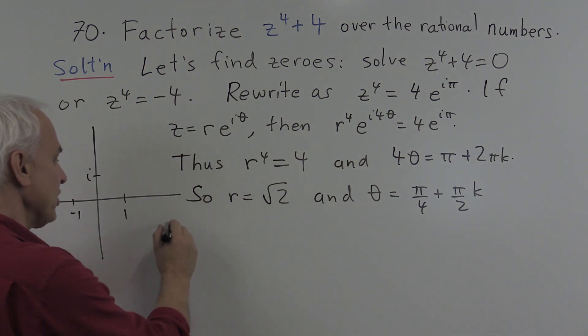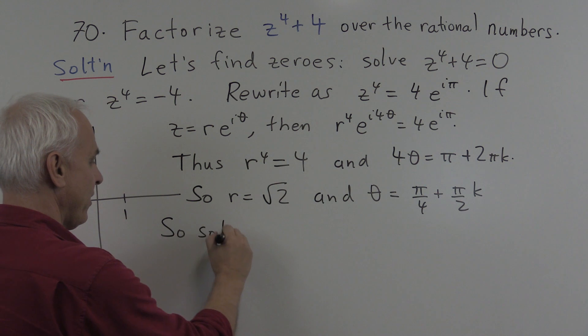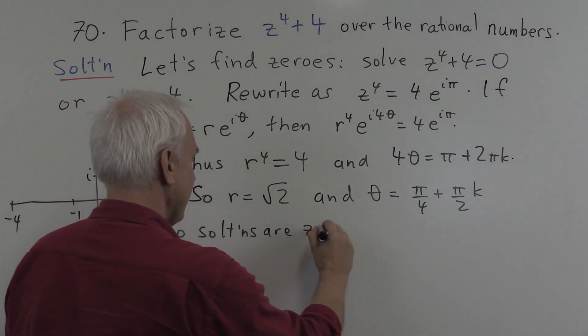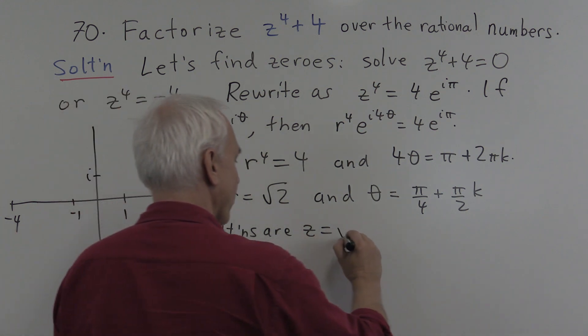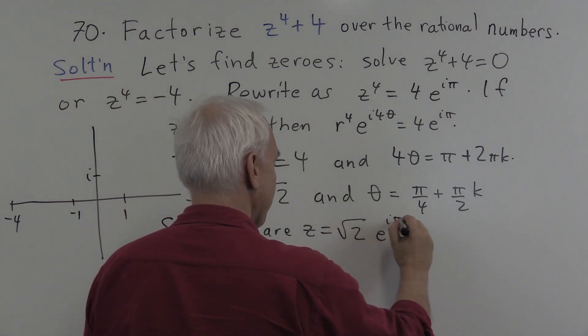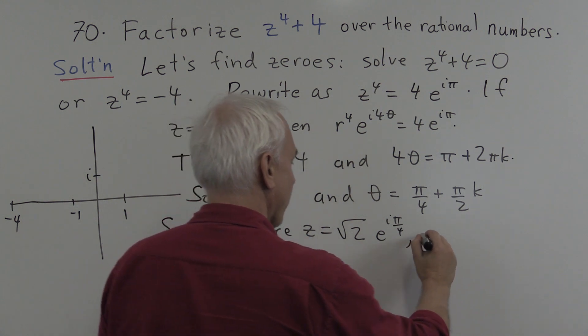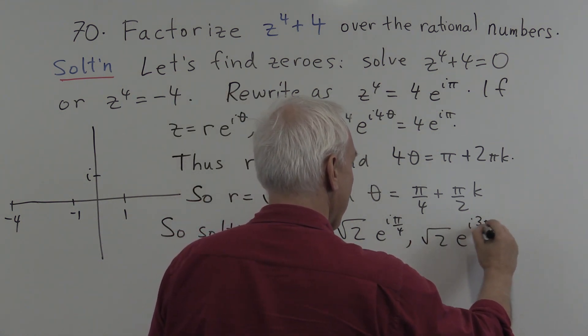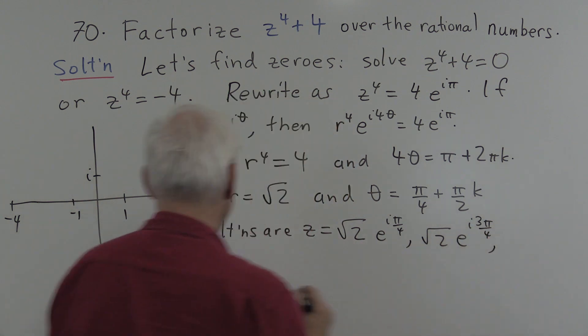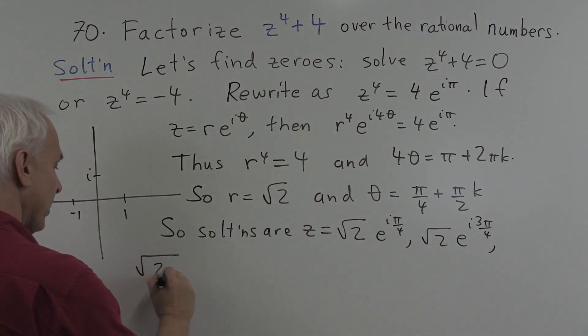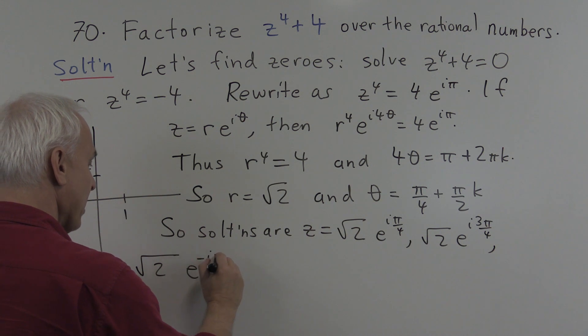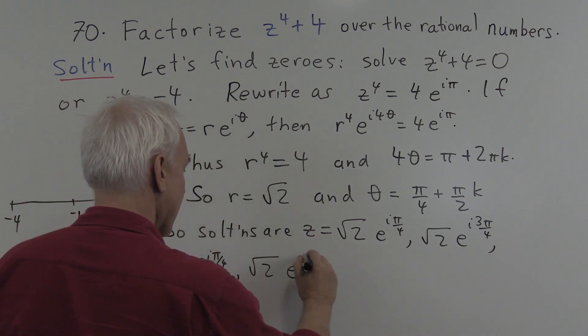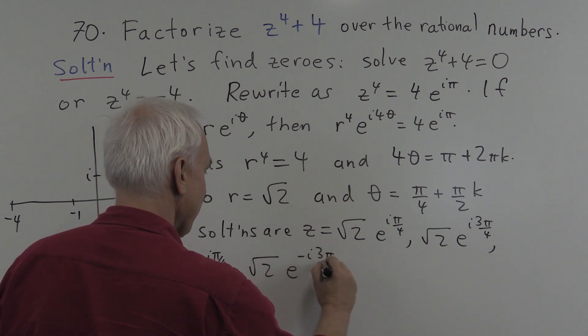So the solutions are z equals root 2 e to the i pi on 4, root 2 e to the i 3 pi on 4, root 2 e to the minus i pi on 4, and root 2 e to the minus i 3 pi on 4.